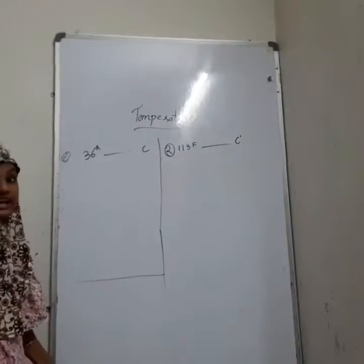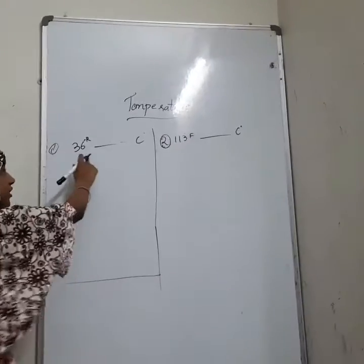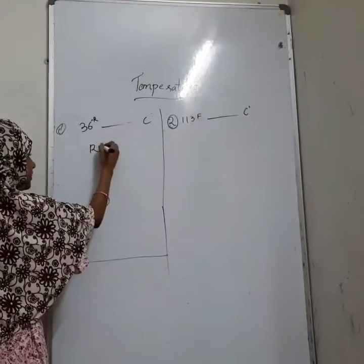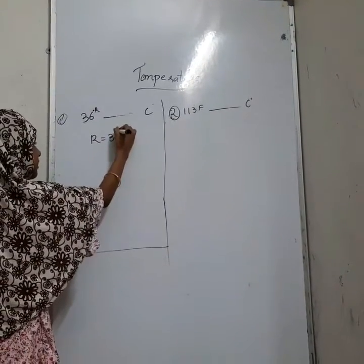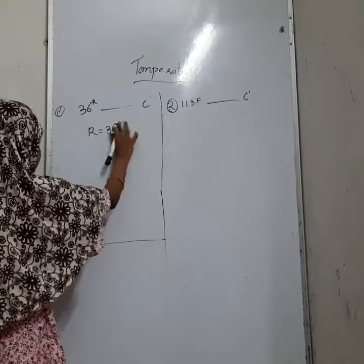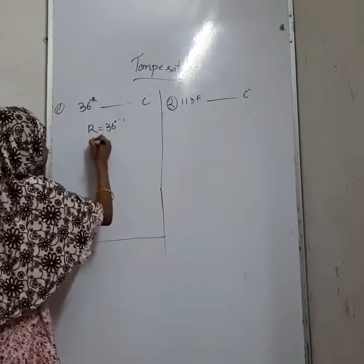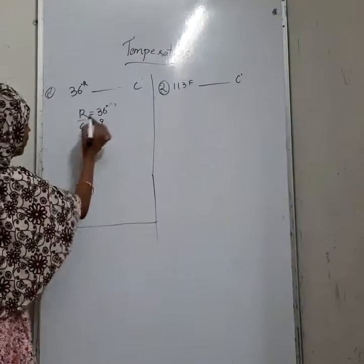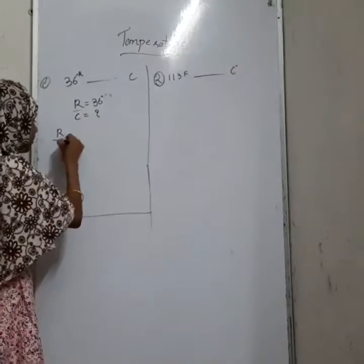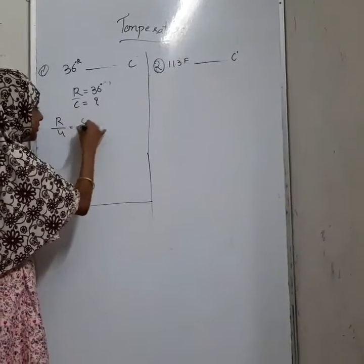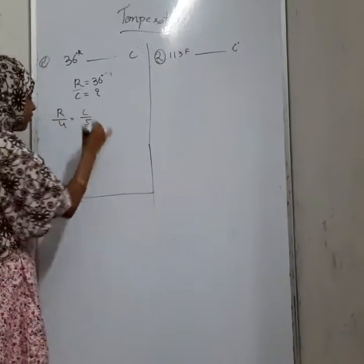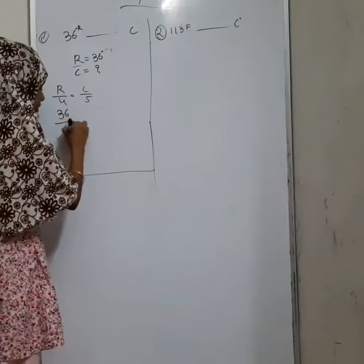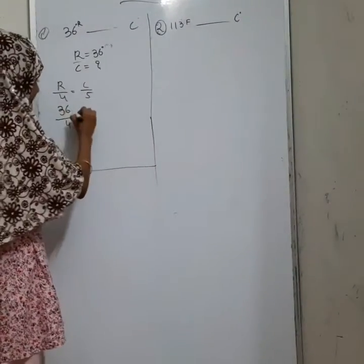Now we can solve: convert Réaumur into Celsius. Here R is equal to 36. The formula for Réaumur is R by 4 is equal to C by 5.